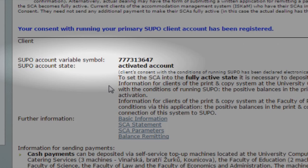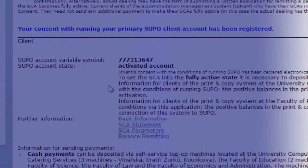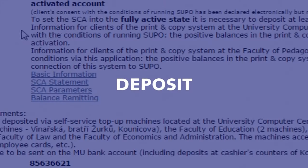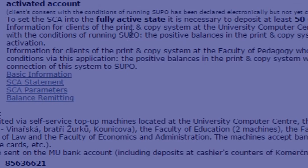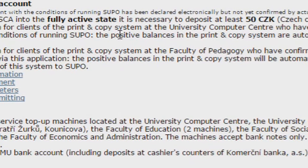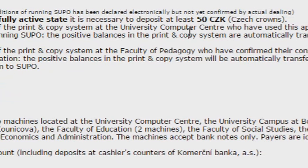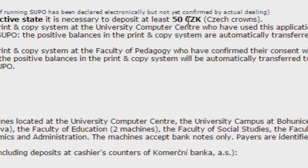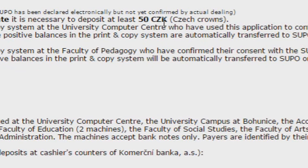Your variable symbol is your personal specific number and you will need it during your stay in Brno. For example, it is necessary to mention it when making money transfers from your account to Masaryk University account. After the activation, the SUPO system automatically sends you a message in English and in Czech about a deposit of 50 Czech crowns to be paid. Please ignore this message.